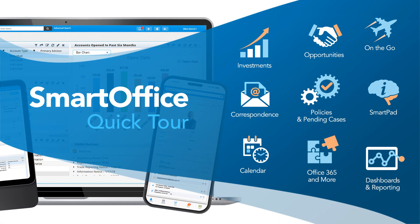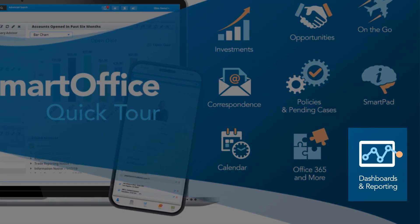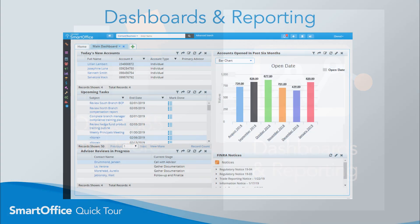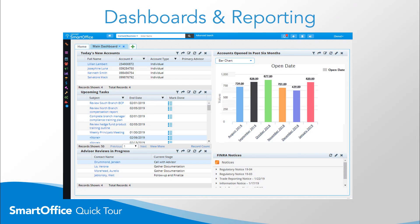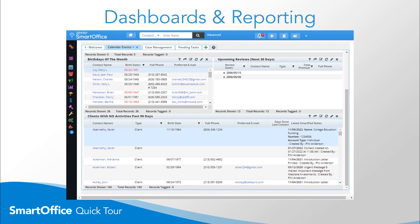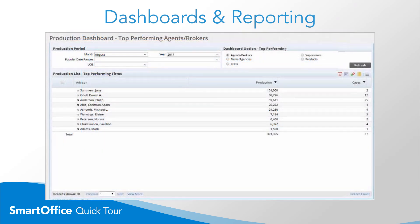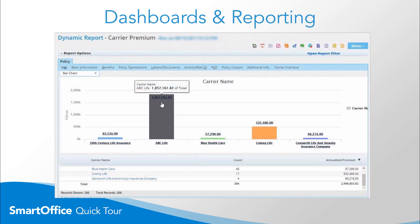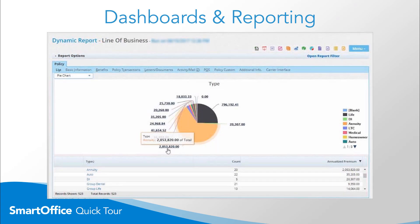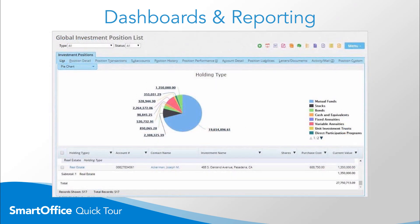The moment you sign into SmartOffice, dashboards and reporting offer maximum visibility into your client data. A list of upcoming birthdays, anniversaries, age changes, and policy renewals will give you a reason to keep in touch. Performance metrics by advisor, carrier, or line of business help you identify trends and guide future activities.